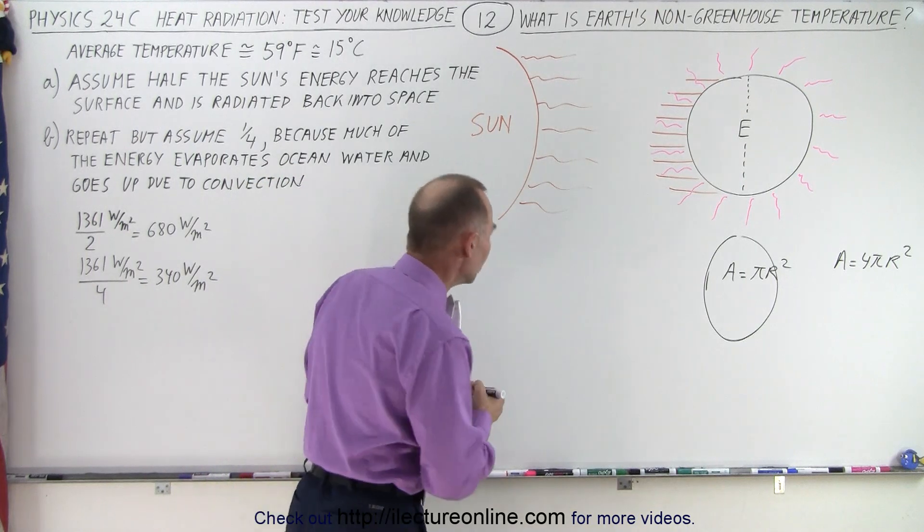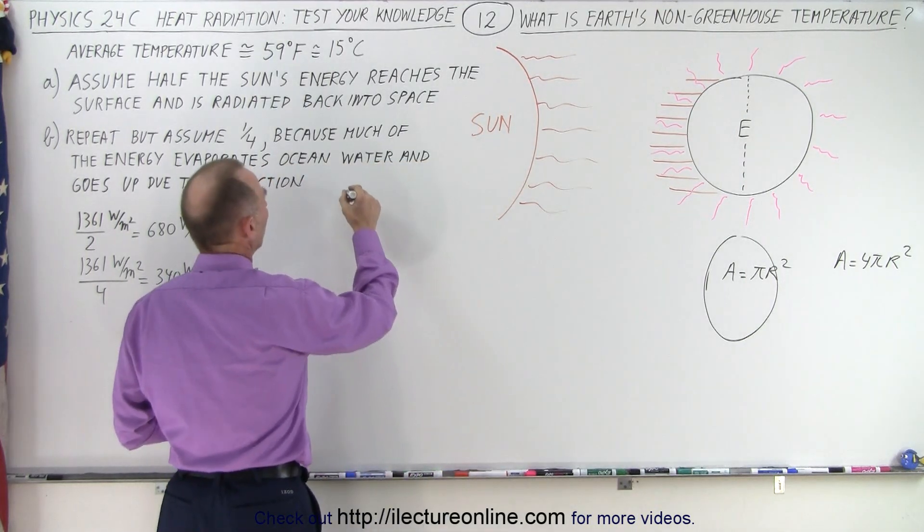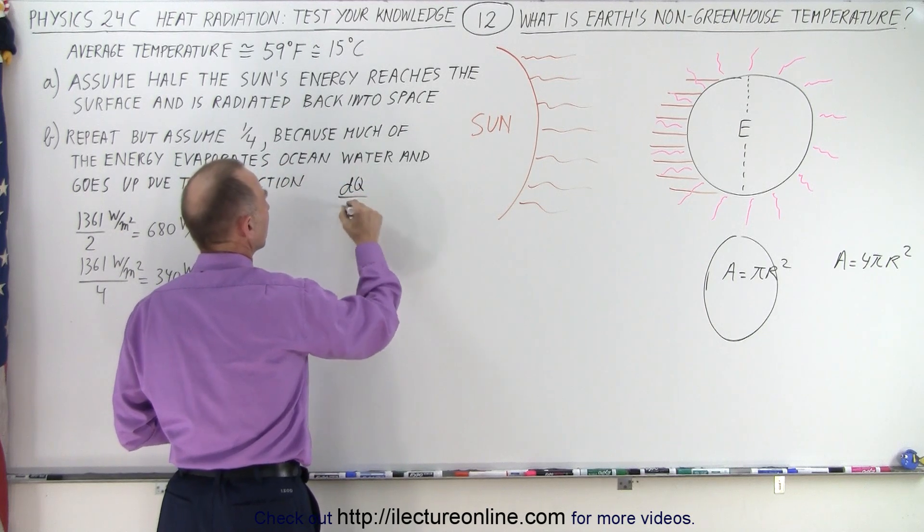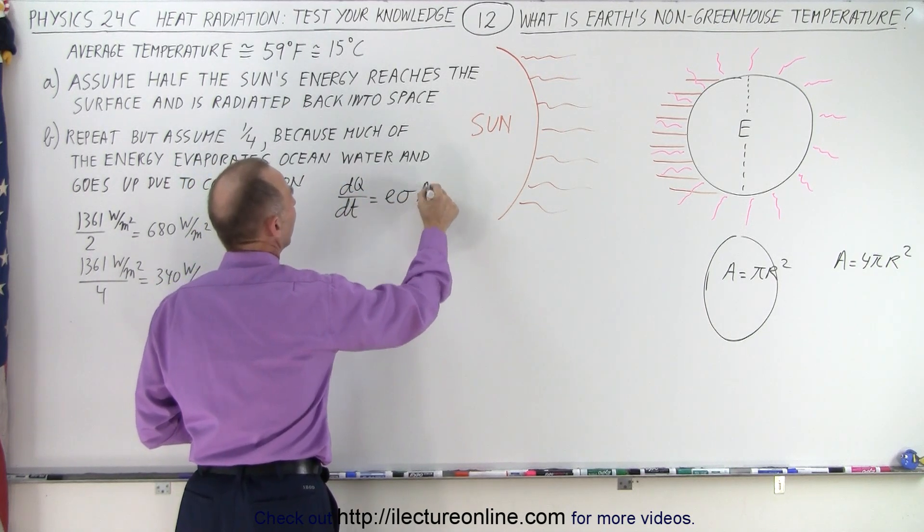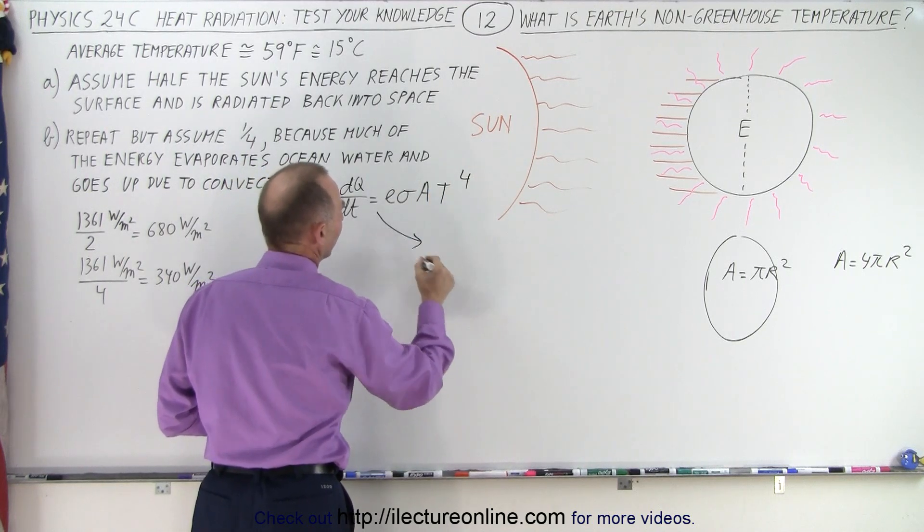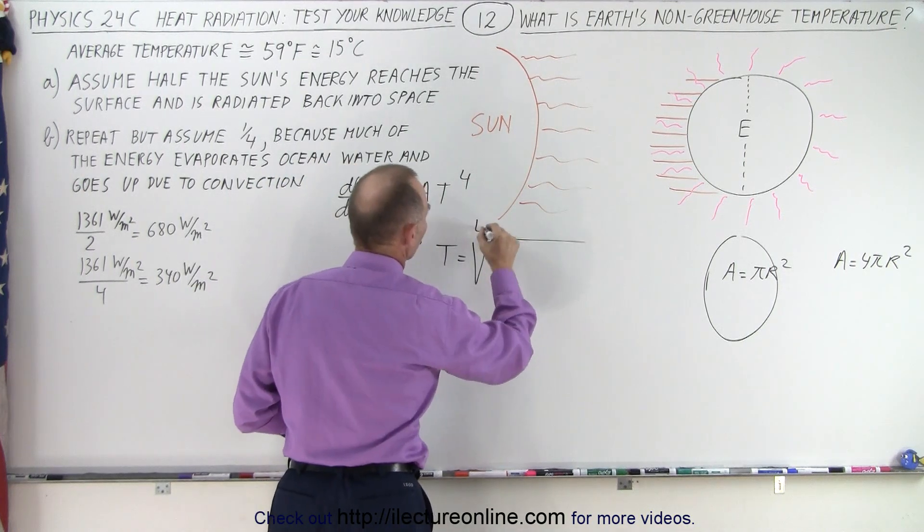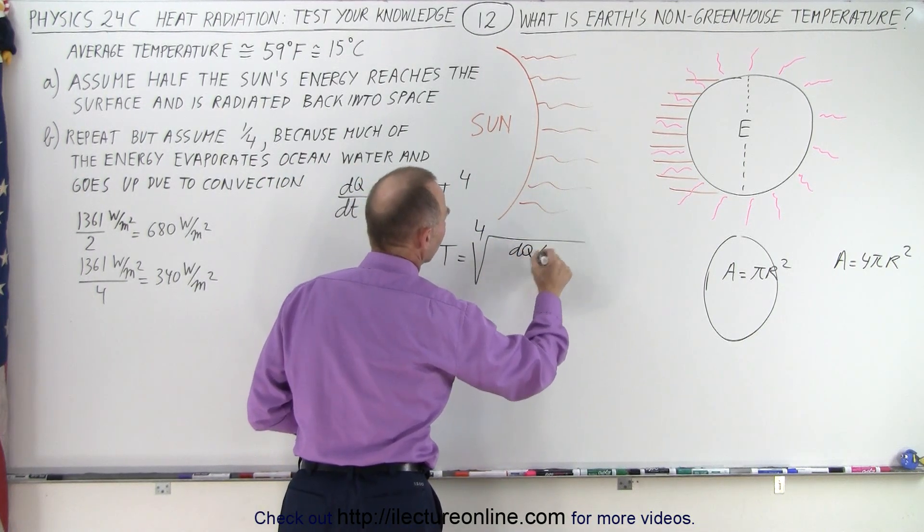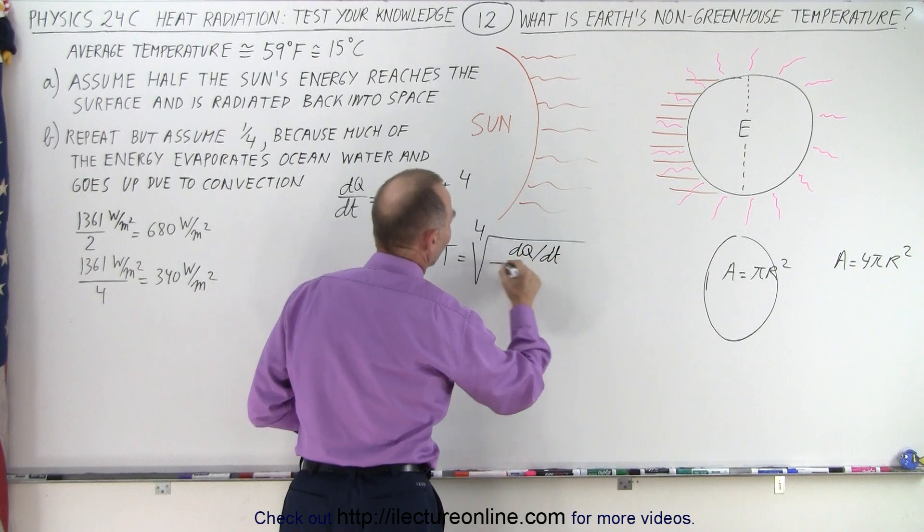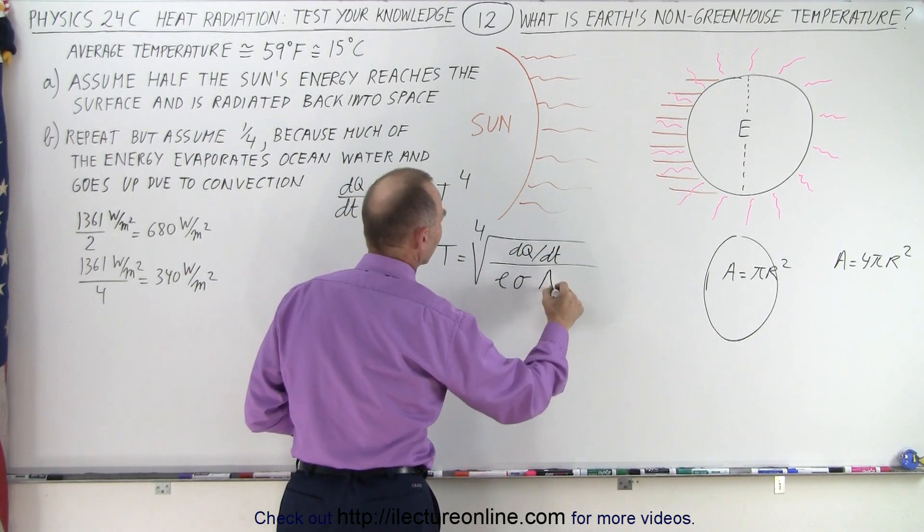So next what we're going to do is we're going to put in the equation, of course, we start with the equation where dQ/dt is equal to εσA times temperature to the fourth power and converting that to temperature. So the temperature would be equal to the fourth root of dQ/dt divided by that would be εσ and the surface area.